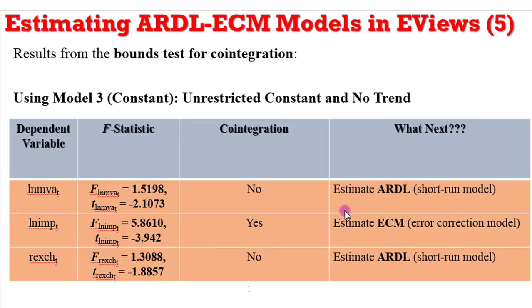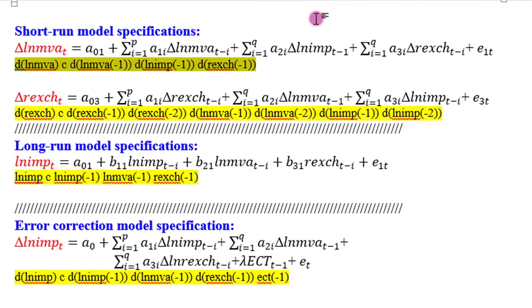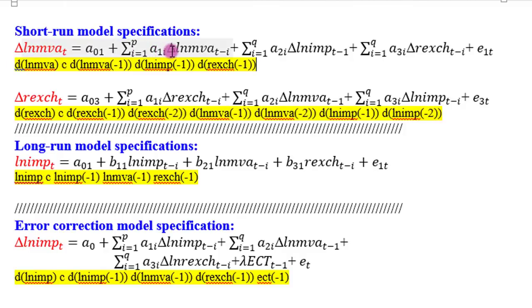Remember, the ARDL is estimated using the ordinary least squares method. On the screen I have spelled out the way the equations will be fed into EViews. For the log of manufacturing output where there was no co-integration, this is the equation we are going to put into EViews. The D is the difference parameter, indicating these are short run equations. This is a short run model for the log of manufacturing output. But before we can be sure that we'll be using one lag, I need to go back to EViews to confirm the appropriate lag lengths for this model.